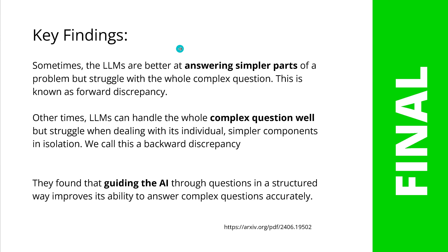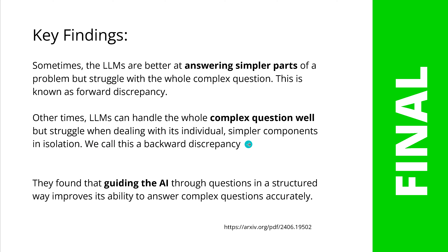We have a hierarchical structure, and then we can apply some mathematics and get insight into how an LLM leverages its internal knowledge. Here you have the final results. Sometimes LLMs are better at answering the simpler parts of a problem but struggle with the whole complex question. This is known as a forward discrepancy.